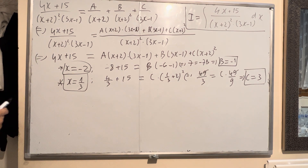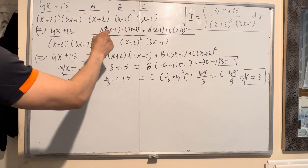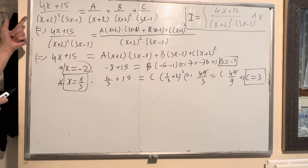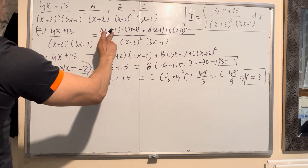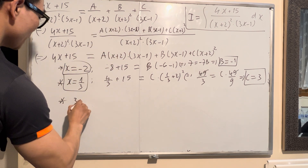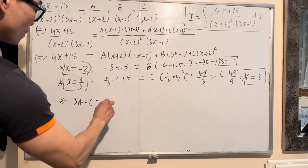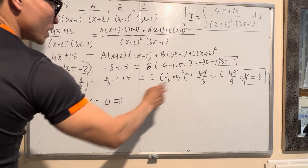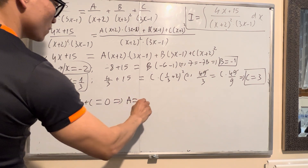When you know B equals negative 1 and C equals 3, you can find A. Check the coefficient of x squared — left hand side x squared equals zero. Right hand side: 3A plus C must equal zero. Since C equals 3, so A has to equal negative 1.